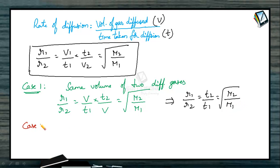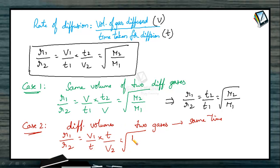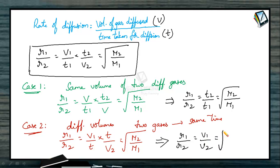In the second case, under similar conditions, if different volumes of two gases diffuse in the same time, then R1/R2 = (V1/T) × (T/V2) = √(M2/M1). Since the two gases are diffusing in the same time, time cancels out, giving R1/R2 = V1/V2 = √(M2/M1).